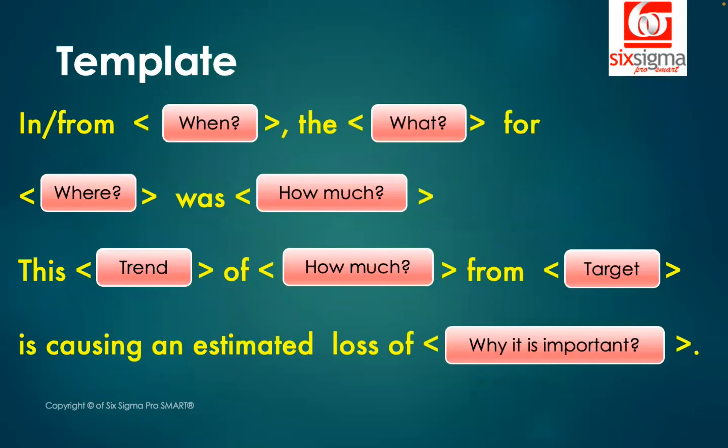So it starts with something like in or from. So you mention the time period. If you're talking about a particular time period, you can mention the duration also, like we wrote from Q1 to Q4 of calendar year 2022. The what? So what are you measuring here? What is the key performance measure or metric? In our case, it was the average view count.